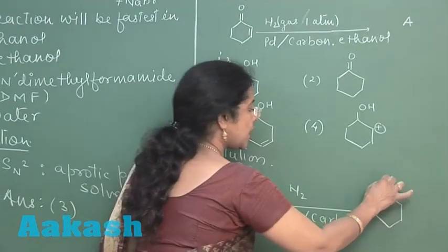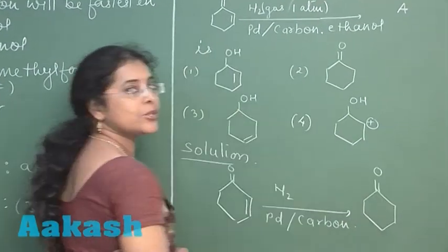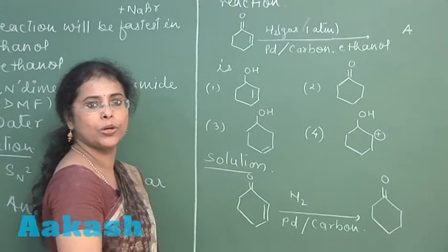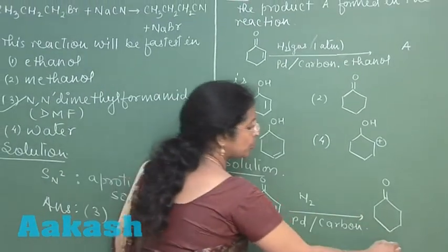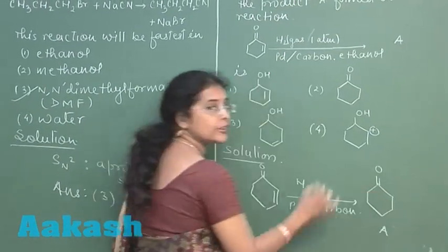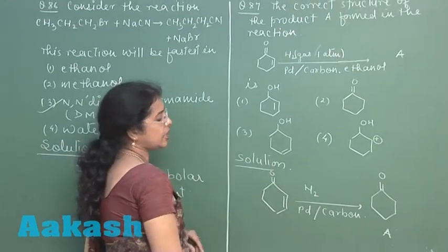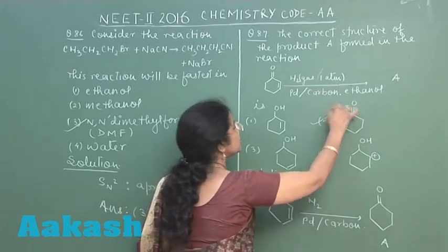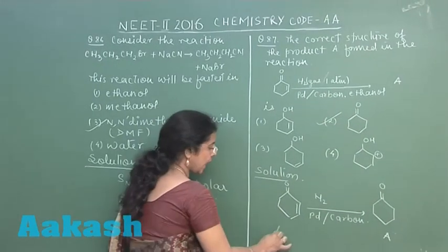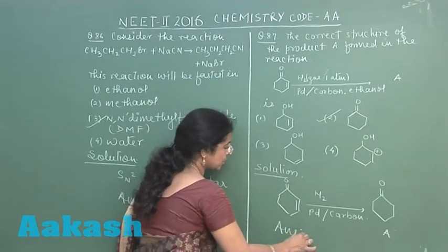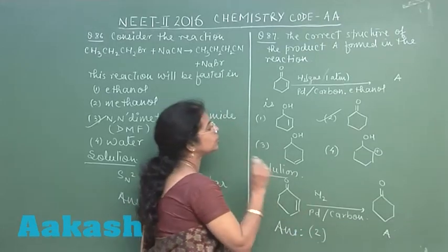Carbon acts as poison, it reduces the catalytic activity of palladium, so carbonyl group remains as such and carbon-carbon double bond is reduced, it is converted into saturated carbonyl compound. So, structure of the product A should be like this. Now first option is this one, that is incorrect. Second option matched to this structure, so this is the correct one and answer of this question is option 2.